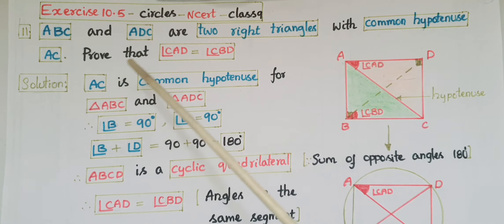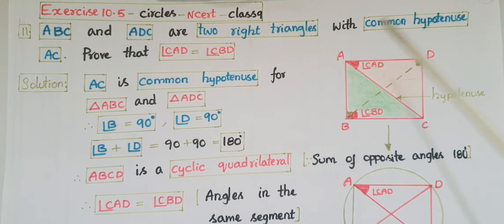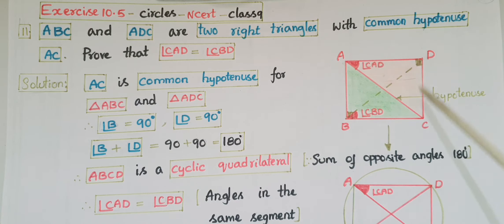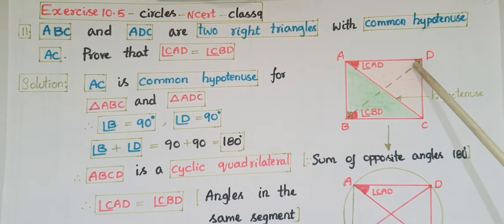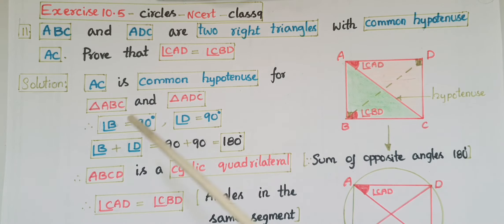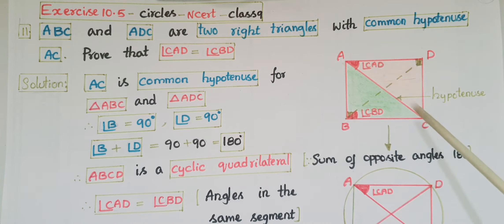Prove that angle CAD is equal to angle CBD. Here, AC is the common hypotenuse of triangle ABC and triangle ADC. We know that the opposite angle of the hypotenuse is 90 degrees, so angle B is 90 degrees and angle D is 90 degrees. If you draw ABC and ADC with a common hypotenuse AC, you will get a quadrilateral ABCD.